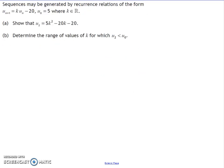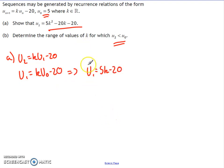Last question. Sequences are generated by this recurrence relation. I want to show that u2 equals this and then find a range of values for k for which u2 is less than u0. So first one, I know that u2 equals k times u1 take away 20. I don't have u1 yet, so I need to get that. I know that u1 equals k times u0 take away 20, and u0 is 5. So u1 equals 5k take away 20. This can then be substituted into there. So u2 equals k times 5k minus 20 take away 20. From that, I can multiply the bracket and say u2 equals 5k squared take away 20k take away 20. So we've proven what we want here.